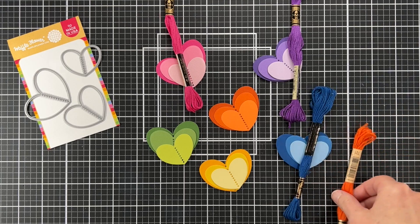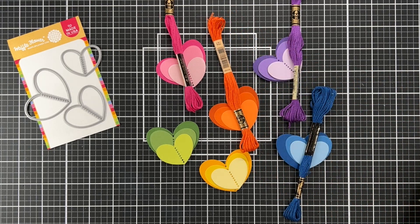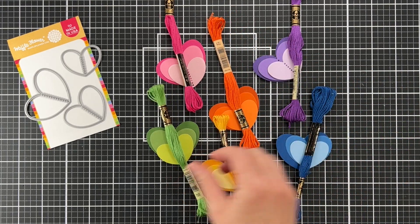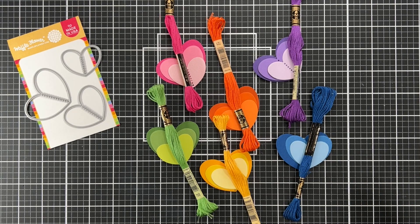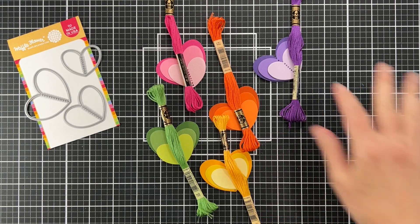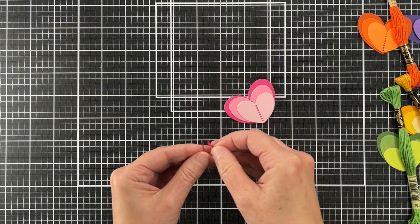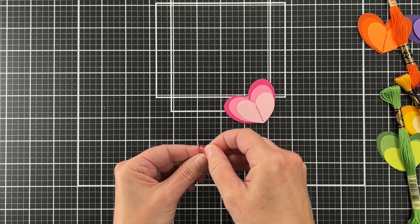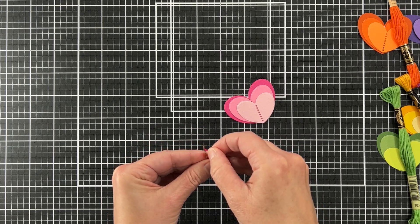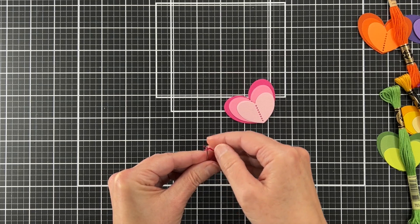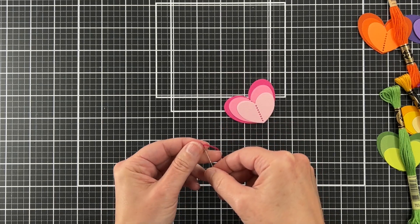I'm going to stitch these hearts. You don't have to stitch them, this is just what I chose to do today. For today's card we're just going to be using the pink, green, and yellow hearts. The hardest part of the entire card is what you see me doing here, and that is threading the needle.